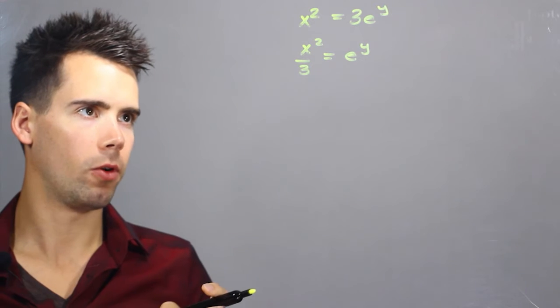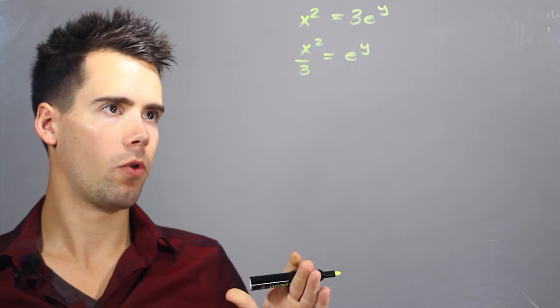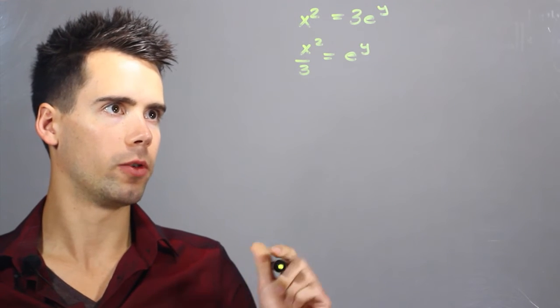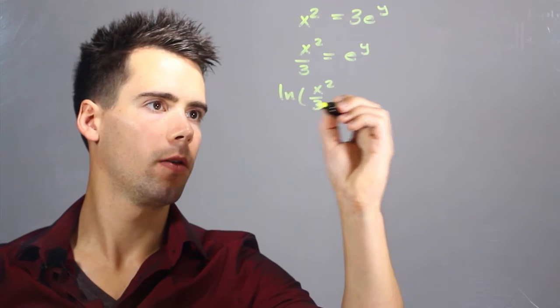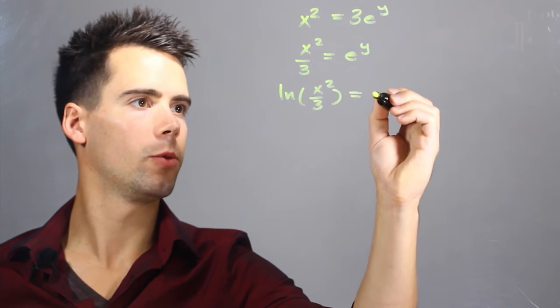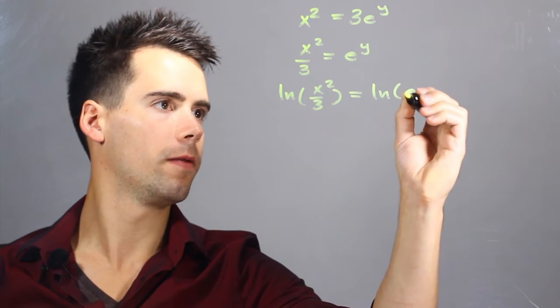Now the next step involves performing a natural log operation on both sides and we find that natural log of x squared over 3 is equal to the natural log of e to the y.